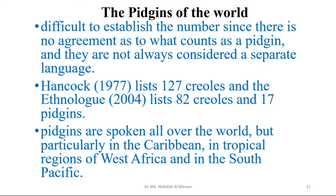In the world we see a number of Pidgins, and it is difficult to establish the number since there is no agreement as to what counts as a Pidgin and they are not always considered separate languages. Hancock lists 127 Creoles, and the Ethnologue lists 82 Creoles and 17 Pidgins. Pidgins are spoken all over the world, but particularly in the Caribbean, in tropical regions of West Africa, and in the South Pacific.